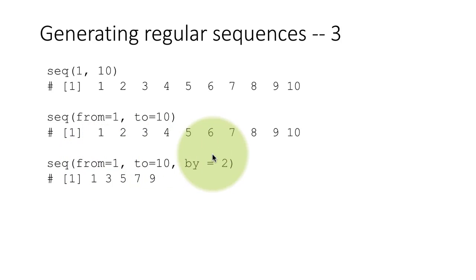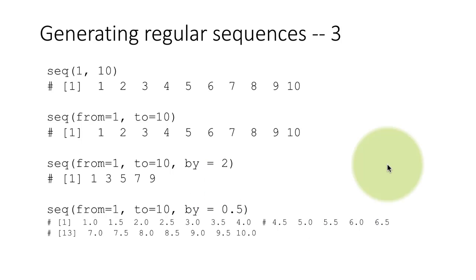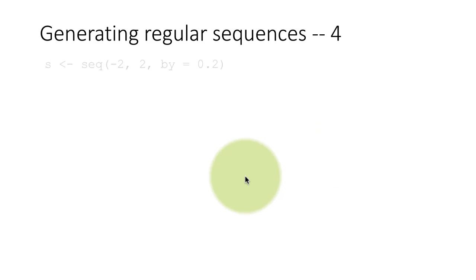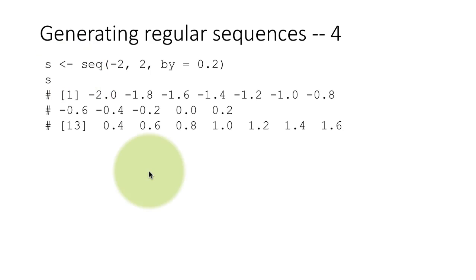It also happens that from, to, and by are actually the first three arguments to the seq function, so I could simply have said seq(1, 10, 2). I can also increment by fractional values. So with by=0.5, we get this result. You get 1, 1.5 all the way up to 9.5, 10. I can start from a negative number and also end with a negative number if I want. Notice that I'm assigning the result to a variable, because the seq function generates a vector. You can either just use the function, see the result on the console, or assign the resulting vector to a variable.